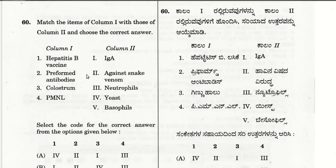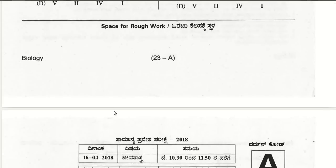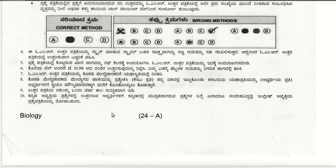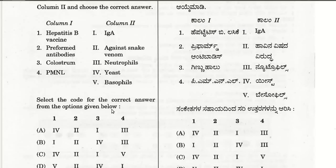Hepatitis B vaccine is produced from yeast, preformed antibodies are used against snake venom. The first choice is the right answer for question 60, completing the 2018 KCET Biology paper. If you liked this video, share it with your friends, like and subscribe for more such videos. Best wishes for your upcoming CET examinations.